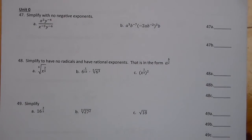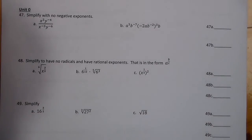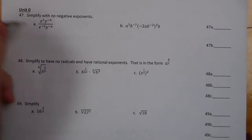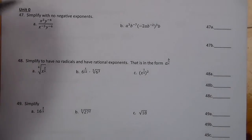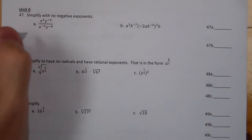We're looking at the Honors Math 2, Unit 0, Fall Final Review. We're starting on number 47. We need to simplify, and it says no negative exponents. When I look at this, I like to move things around — first get rid of the negative exponents.